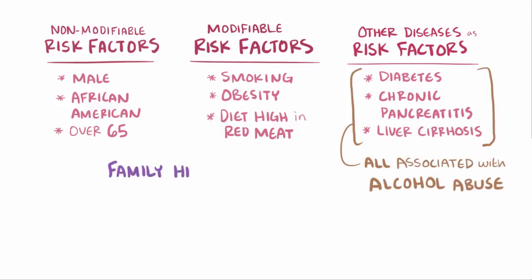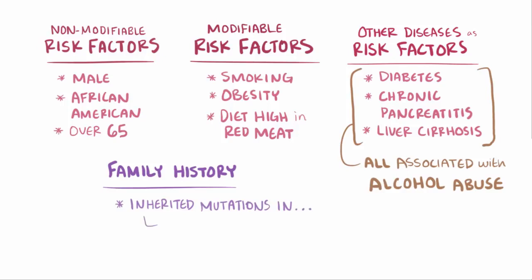Finally, a family history of pancreatic cancer is also an important risk factor. Inherited mutations like BRCA2, or breast cancer gene 2, are the most common cause of inherited pancreatic carcinoma, with mutations in PALB2 taking second place.